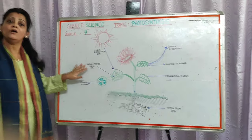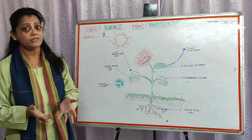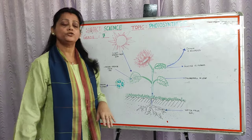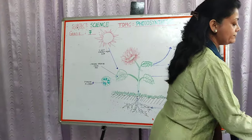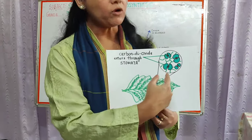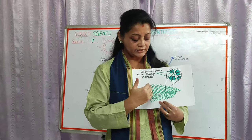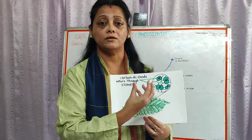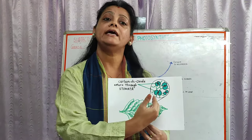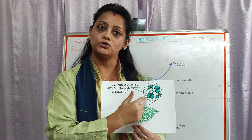The second raw material required is carbon dioxide. Carbon dioxide is present in the air around us. Carbon dioxide enters the leaves through small holes called stomata. The leaves of the plant have small holes on them called stomata — not visible through our naked eyes, but they are there. These small openings called stomata open and close, and carbon dioxide enters the leaves of the plant through them.